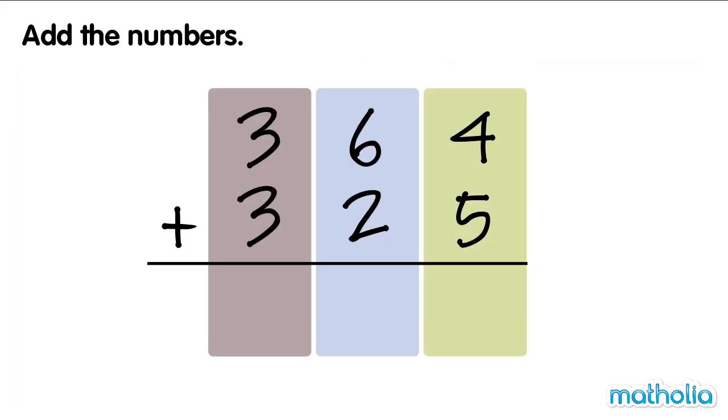Add the numbers. Let's add 364 and 325. Start by adding the 1s. 4 1s plus 5 1s equals 9 1s.